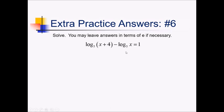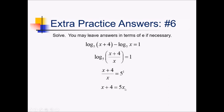On this problem, before I can go any further, I need to combine the logs on the left side into just a single log before I can undo any logarithms. To merge these together by subtracting, I have to divide the things inside of them. So this is really log base 5 of x plus 4 over x equals 1. Now to get rid of log base 5, I'm going to raise 5 to both sides. That leaves me with x plus 4 over x on the left and 5 to the 1 on the right. Multiply both sides by x: x plus 4 equals 5x. Subtract x, that's 4x. Divide by 4, we've got x equals 1. Quickly checking: if I plug 1 into the original equation, I'm getting positives inside both logs. So this is a legitimate answer.